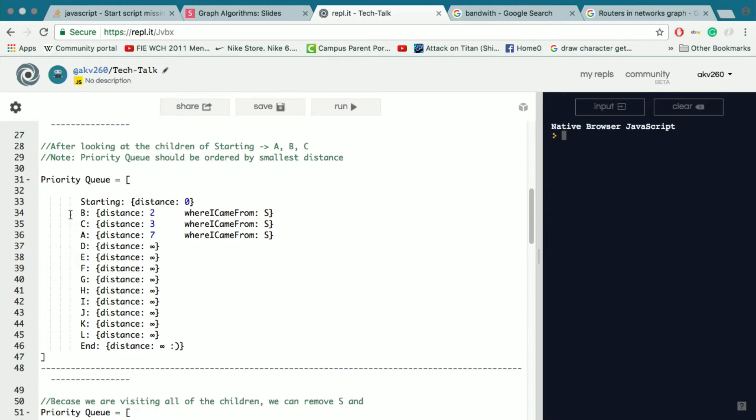So we can remove the starting point and just focus on B, C, and A. And this queue is sorted by the distance being the smallest at the top and the distance being larger at the end.